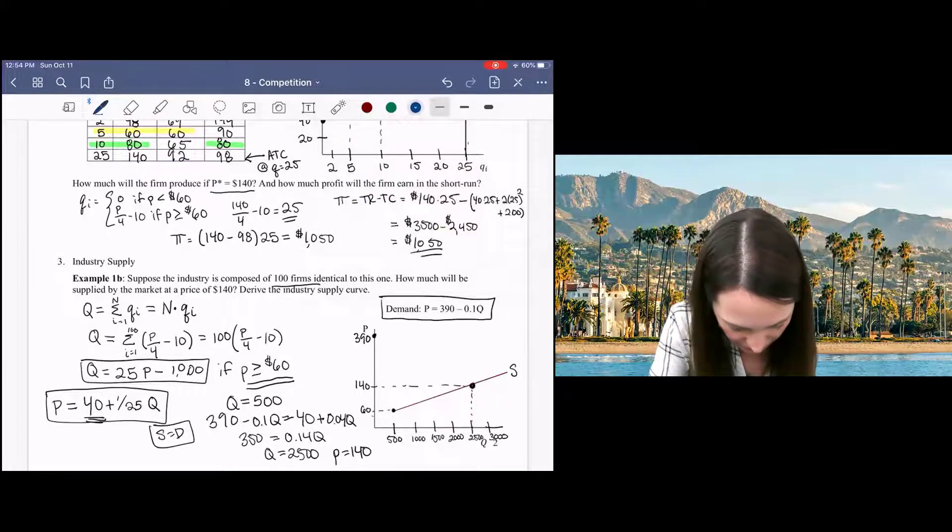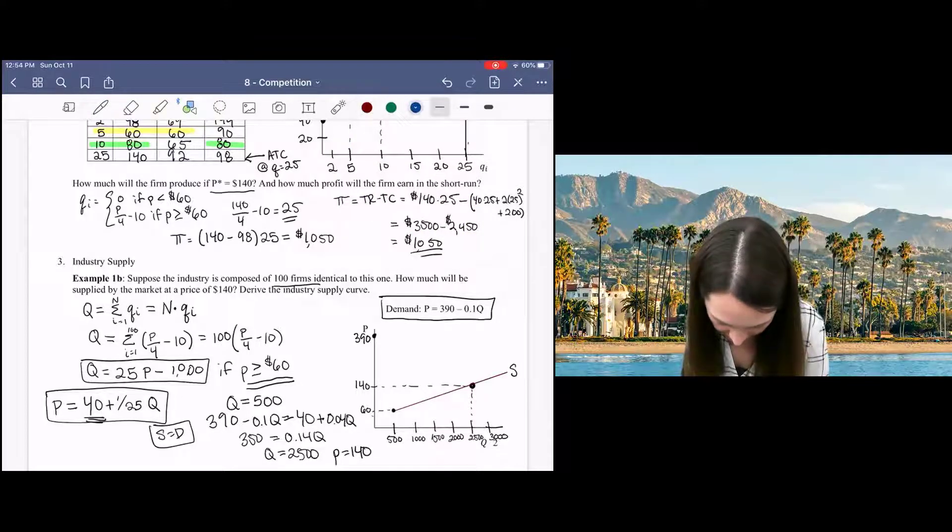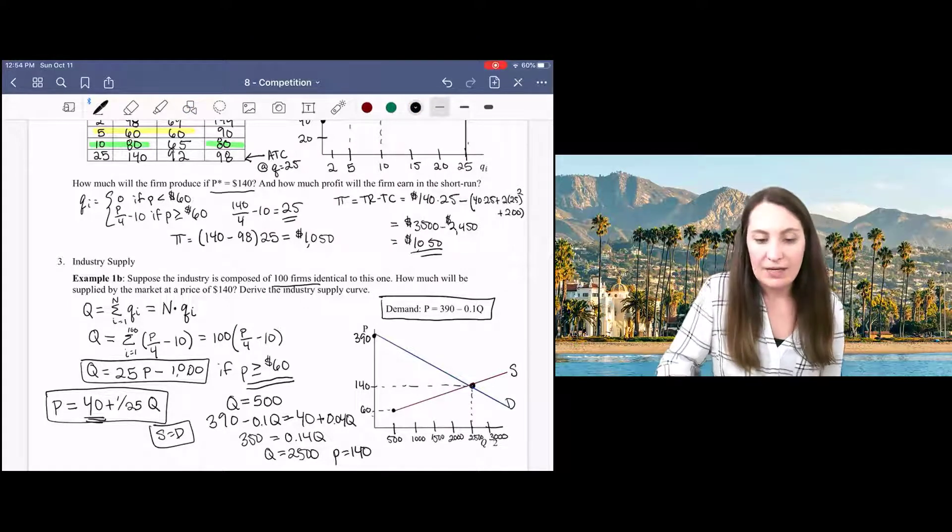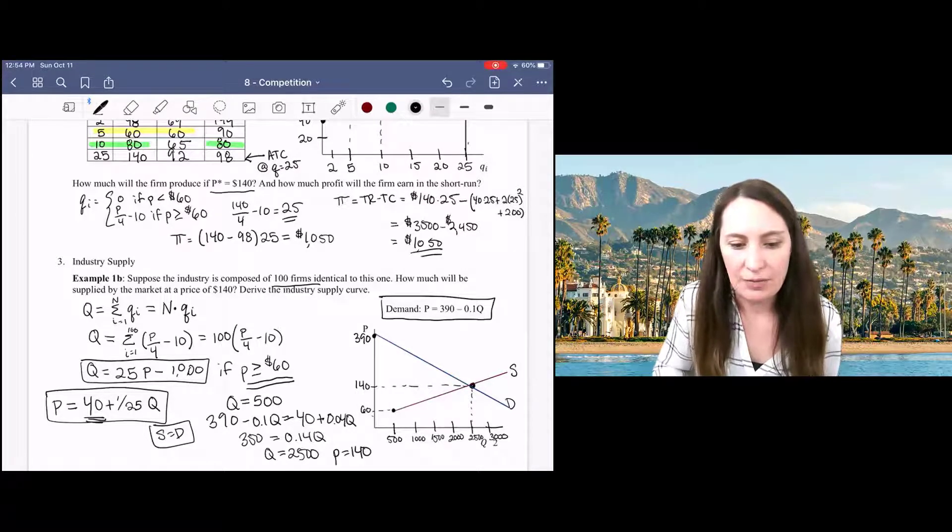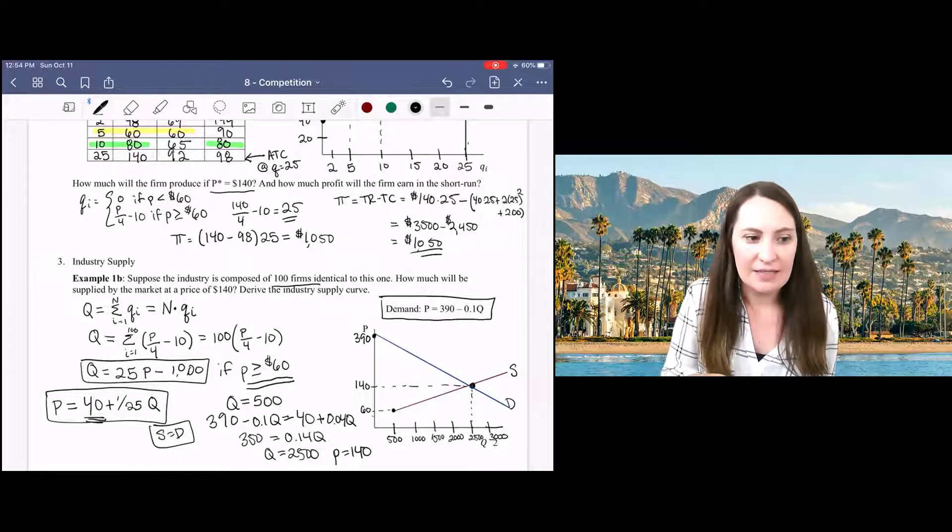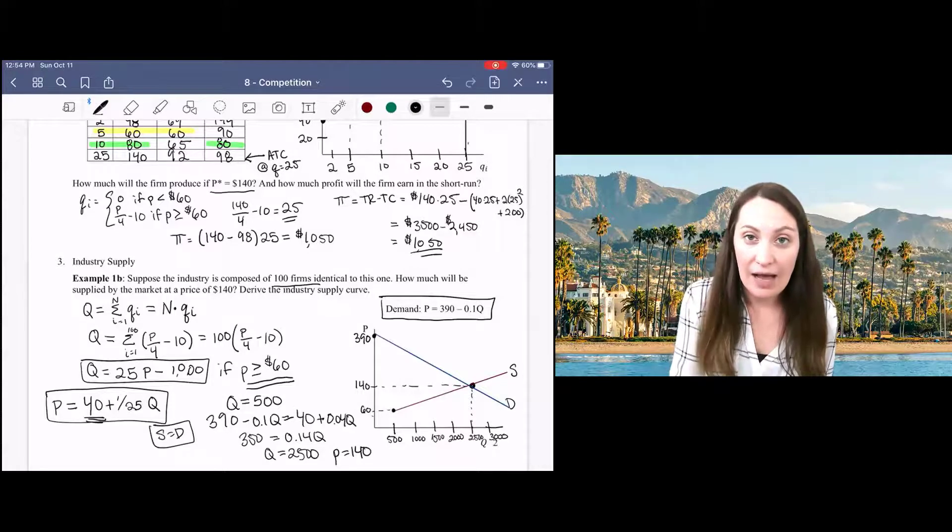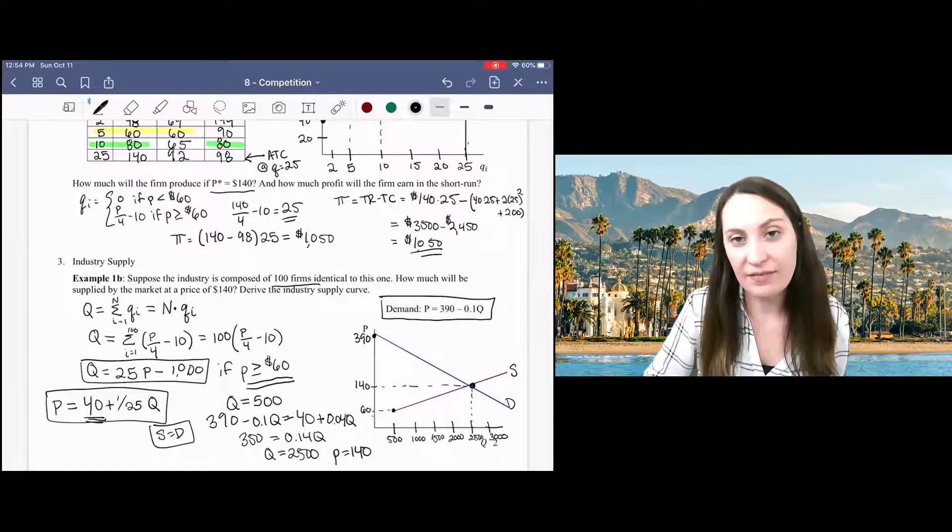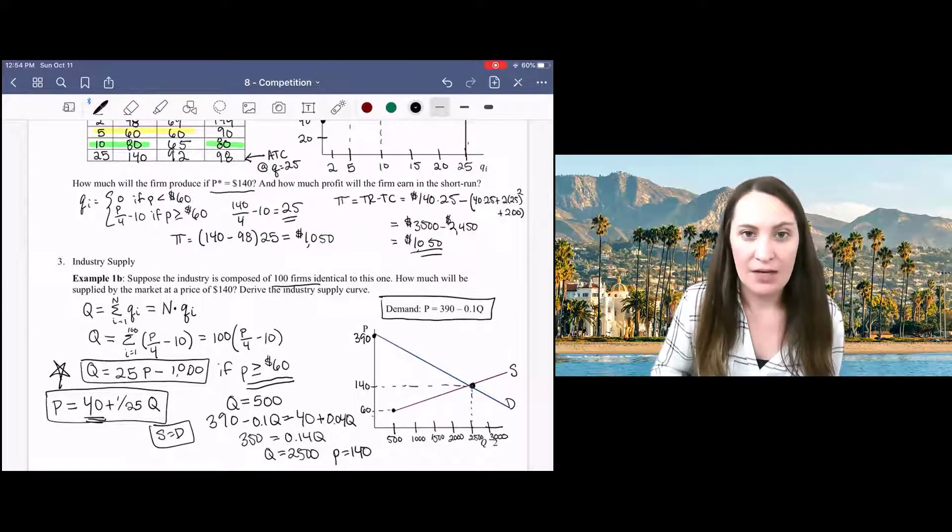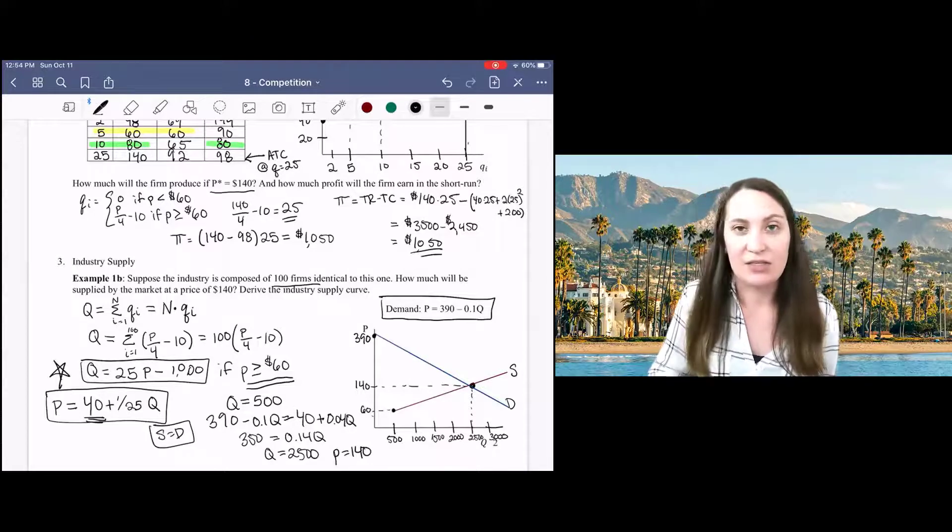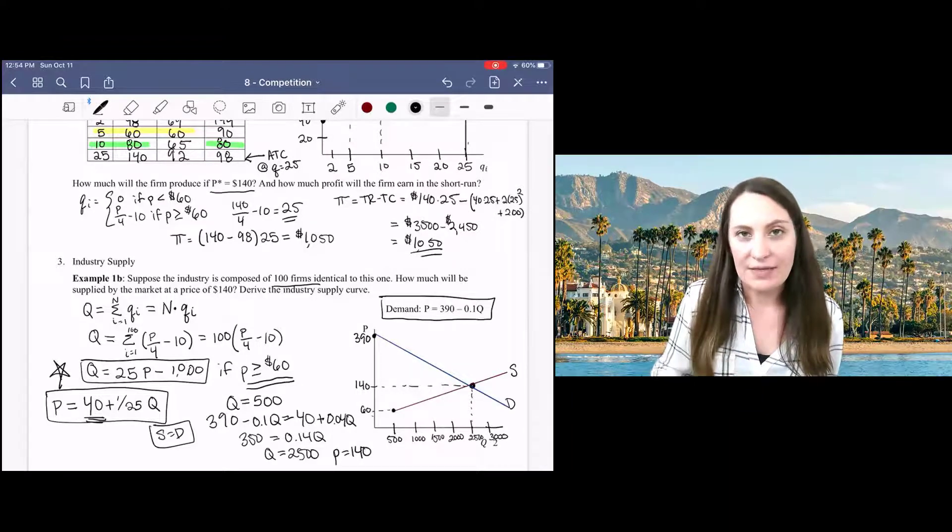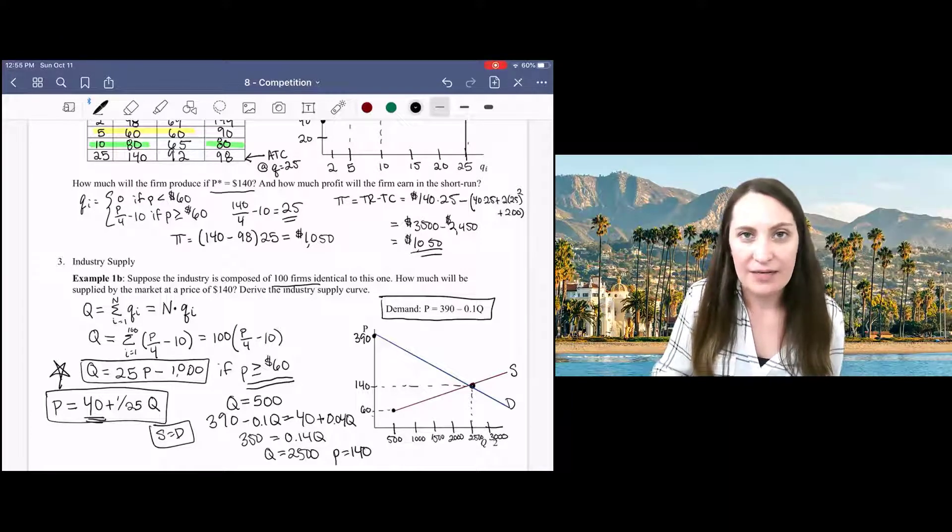So for my demand curve, it's going to look like this so that our market equilibrium price is 140 and our market equilibrium quantity is 2,500. I think really the takeaway from this is that you can get market supply by adding up all of the individual firm's supply curves to get this equation here. Going forward, we're going to talk about what happens in the long run. Given a demand curve, how will we see firms respond by entering or exiting the market?